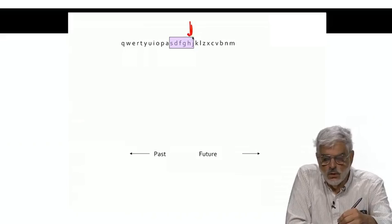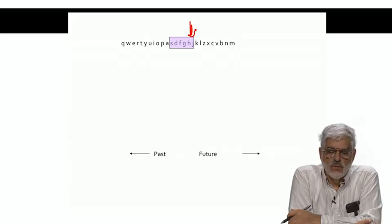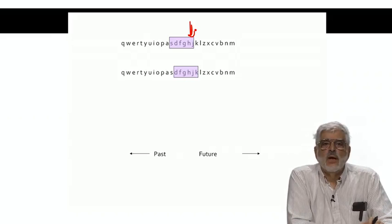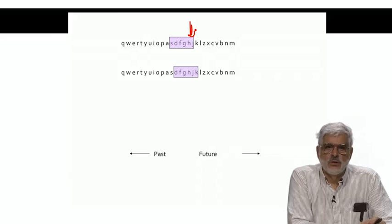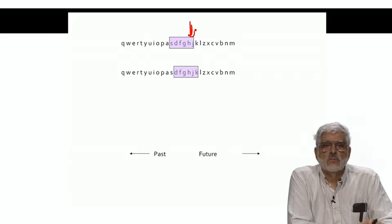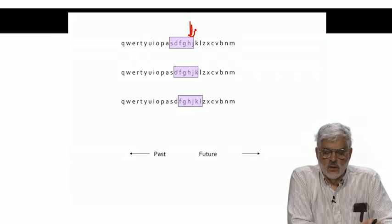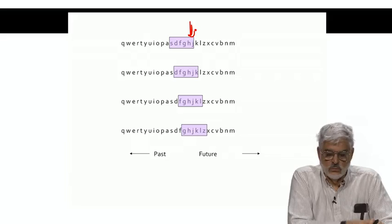So here's a little picture of a stream and a window of length six. Initially, the stream has arrived up to this point, J, the elements K, L, and so on will arrive in the future. Now, K arrives. The oldest element, S, is no longer part of the window, which continues to hold exactly six elements, as it always will. Now, L arrives, and D falls out of the window. And Z arrives, causing F to be dropped from the window.